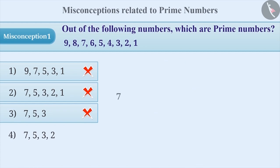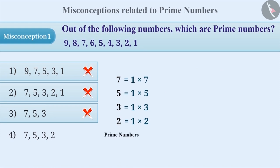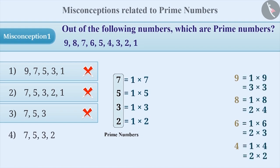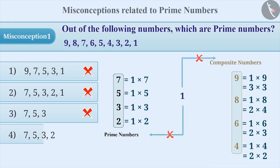The correct way is like this. Since 7, 5, 3, and 2 each have only two factors, out of the given numbers, only 7, 5, 3, and 2 are prime numbers. If we talk about 9, 8, 6, and 4, they have more than two factors. Therefore, they are composite numbers. 1 is neither a prime number nor a composite number. That's why the correct answer is option 4.